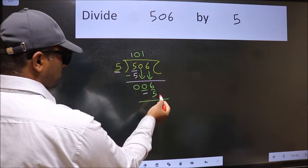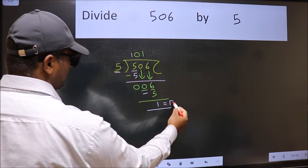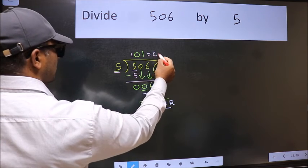No more numbers to bring it down. So we stop here. This is our remainder and this is our quotient.